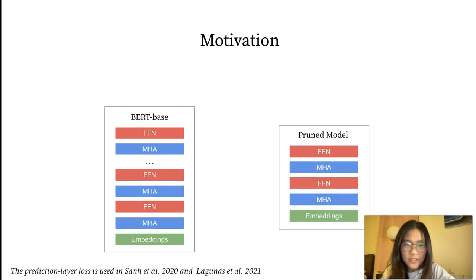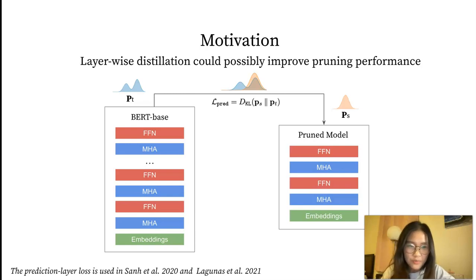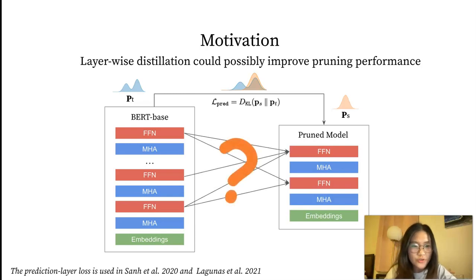In terms of training objectives, it's common to use a prediction layer distillation loss to replace the cross-entropy loss in structured pruning. In the context of knowledge distillation, using an additional layer-wise distillation objective further improves the performance of compressed models, which we posit would be beneficial to structured pruning as well. However, with a dynamically changing model structure during training, it's unclear how to further utilize the layer representations to guide the pruning process.